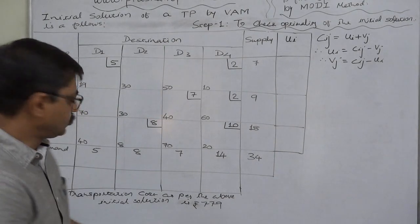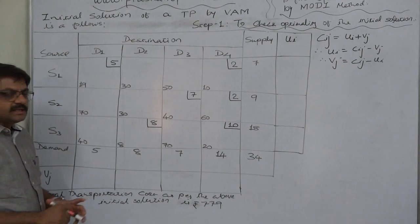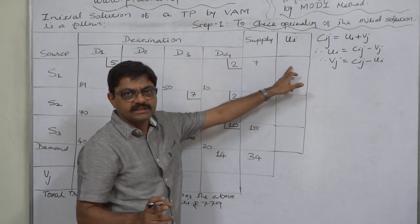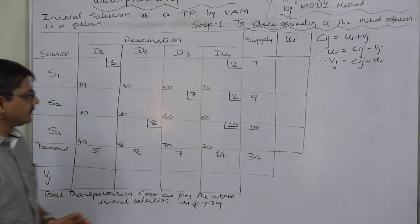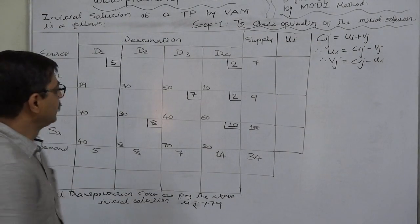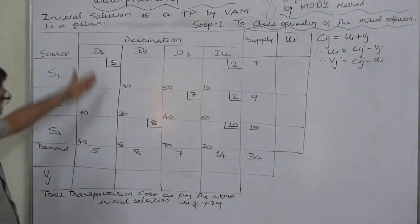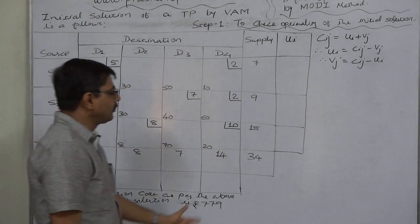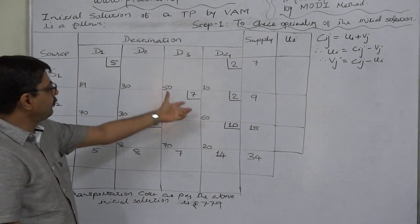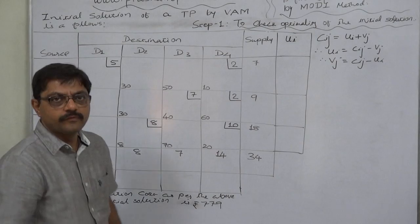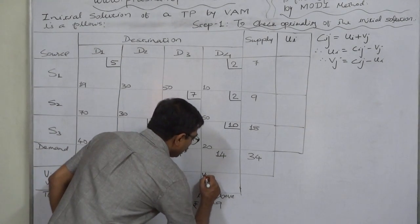There are no particular rules, but it is advisable to take the value of any one ui or vj as 0 where there are the highest number of occupied cells. In the first row there are 2 occupied cells, in the second row 2, in the third row also 2. In the fourth column, all 3 cells are occupied — 3 out of 3 — so the ratio is highest for column D4. I suggest taking the value of v4 as 0.